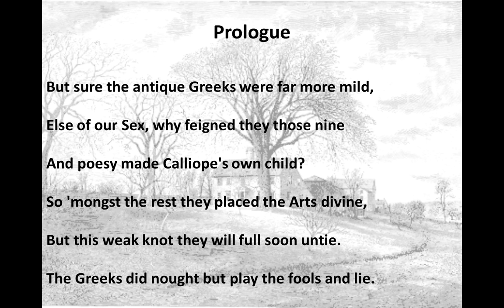'But sure the antique Greeks were far more mild, else of our sex. Why feign those nine, in posy, made Calliope's own child. So amongst the rest they placed the arts divine, but this weak knot they will full soon untie. The Greeks did not but play the fools and lie.' You have to know a little about Greek mythology to understand this. Those nine she's talking about are the nine muses — in Greek mythology, they're the ones that give us the arts, the inspiration. The idea of a muse is this artistic inspiration for a particular vein of art, in this case poetry.